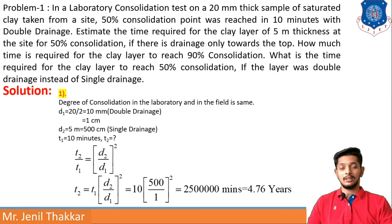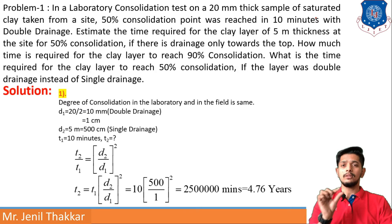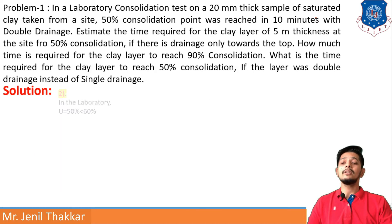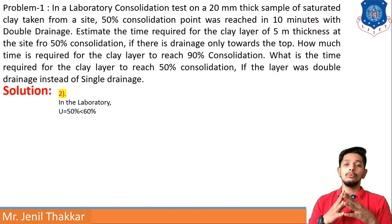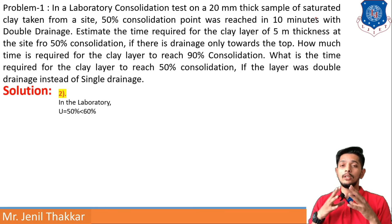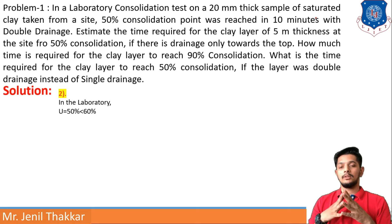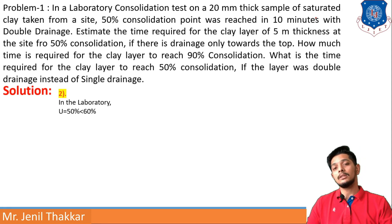This is the first partial solution. Now moving to stage 2: the degree of consolidation U is 90%, which is greater than 60%, so we must use the appropriate Tv formula for higher consolidation percentages.